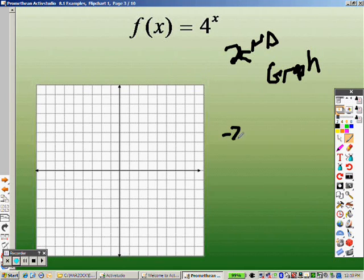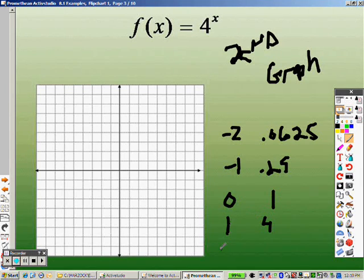Negative 2 is 0.0625. Negative 1 is 0.25. 0 crosses at 1. 1 crosses at 4. And then 2 crosses the whole way at 16.